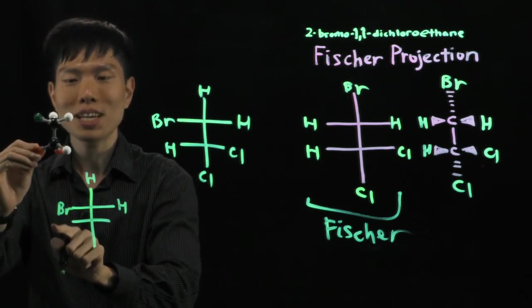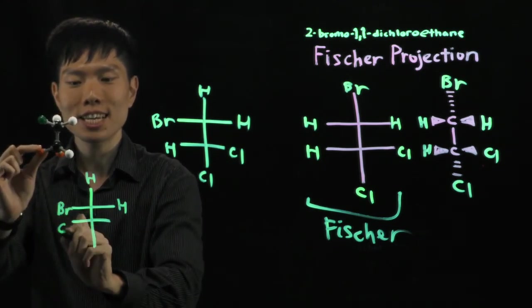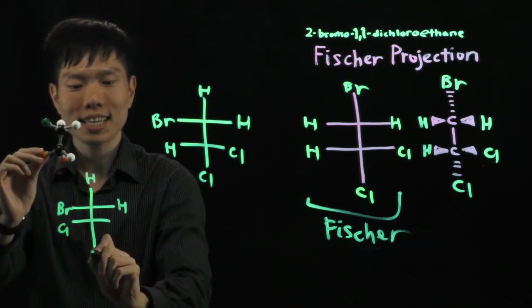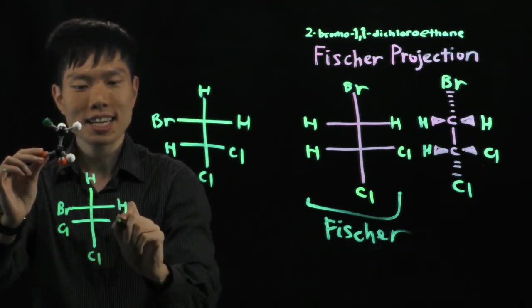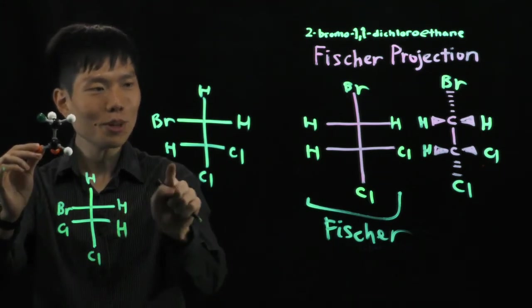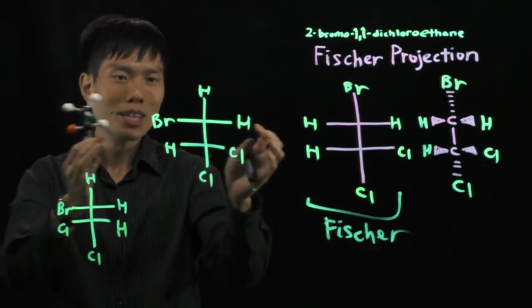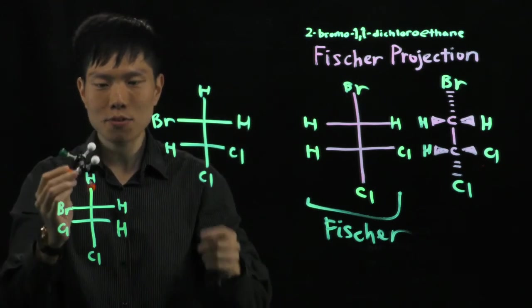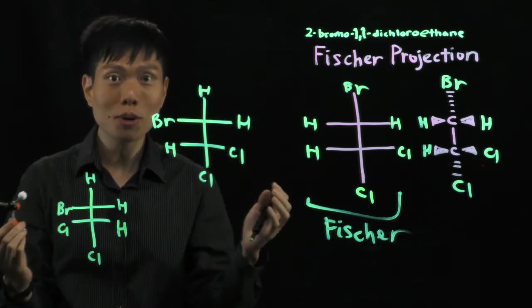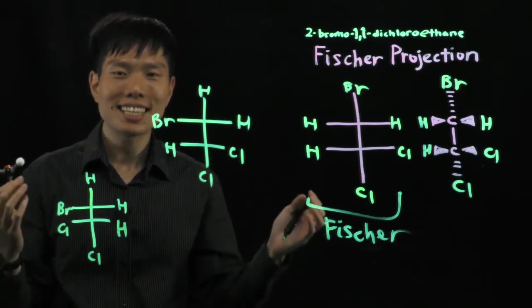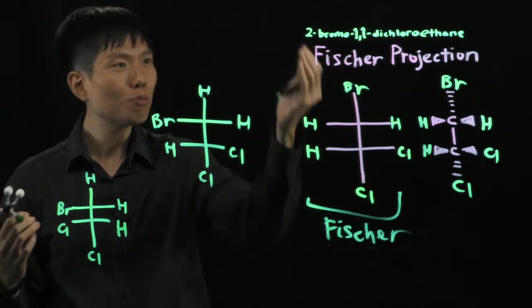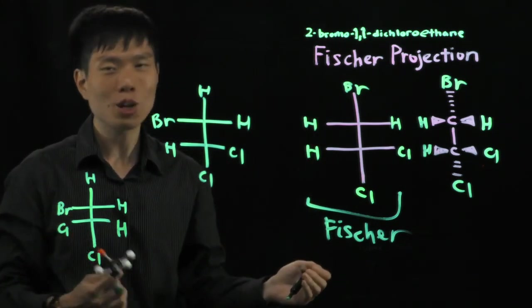And then, here. Bottom part side. We have chlorine. Hidden at the back. Chlorine. Side. Hydrogen. So, these molecules are actually the same. It may be more than meets the eye. You can't see it. But, if you can, think of it like a 3D molecule. You know that they are actually the same molecule. 2-bromo-1,1-dichloroethane.